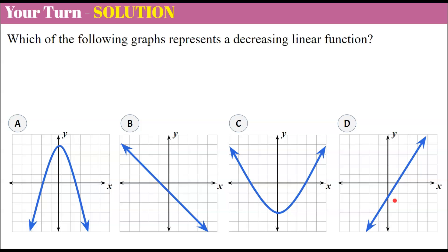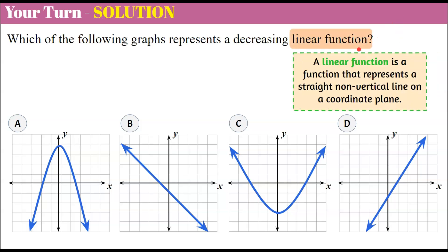Welcome back. Let's review our solution. A linear function is a function that represents a straight, non-vertical line on a coordinate plane. Remember, a vertical line fails the vertical line test and is not a function. Looking at our four choices: A has a curve — it's a parabola, a quadratic function — so we can rule out A. C is also curved and not linear.